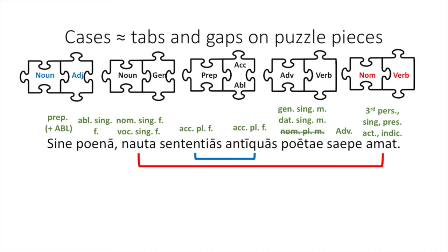We also know more about the sententias because of the word poetae. Since it can be genitive, and since it follows the phrase sententias antiquas, we should understand it as a genitive word that modifies or limits sententias antiquas. It tells us whose sententias antiquas are, the poets. Similarly, the adverb saepe precedes the verb amat that it modifies.